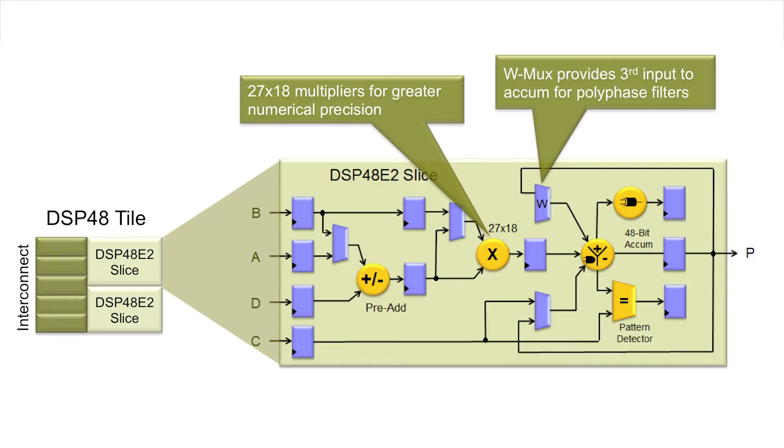The Kintex UltraScale includes an enhanced DSP48E2 slice. This is Xilinx's fifth-generation DSP slice. The DSP48E2 is fully backwards compatible with previous-generation DSP slices, including the 7-series DSP48E1 slice, making design migration very easy. Now let's take a look at a few of the new features. First, the hard multiplier width has been increased from 18x25 to 18x27. This allows for greater bit growth and fixed-point designs in the smallest possible number of DSP slices.